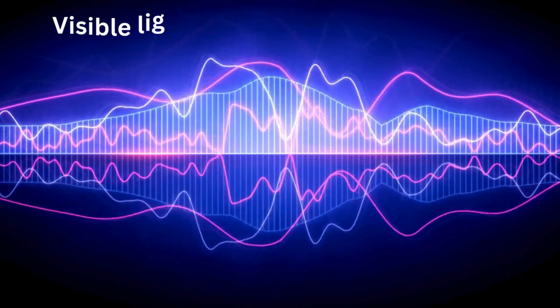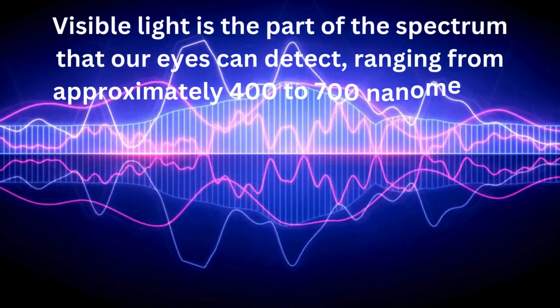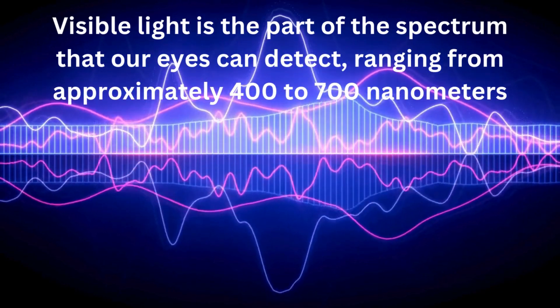Now let's look at different types of light, including infrared, ultraviolet, and visible light. Visible light is the part of the spectrum that our eyes can detect, ranging from approximately 400 to 700 nanometers. This is what we see as colors, from red to violet.